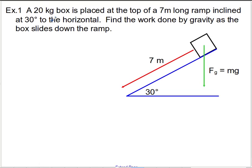So in this case, I have a 20 kilogram box placed at the top of a seven meter long ramp. The ramp itself is inclined at 30 degrees to the horizontal, and so what we want to know is how much work is done by gravity. So the force that we're interested in is gravity, and you can see that's pointed straight down here. A proper treatment of this involves physics, and this is my displacement vector which is down the incline.